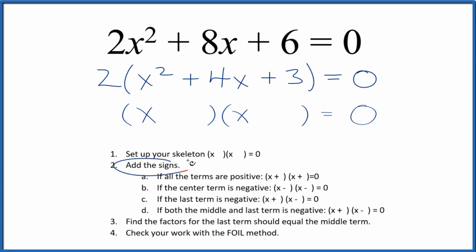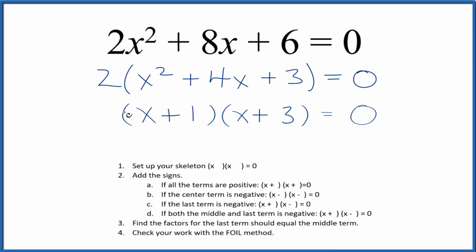If we look at the signs here, we have a positive and a positive, that means we're gonna have a positive and a positive here in our skeleton equation. Now we're just finding the factors for that last term, and they should equal the middle term, add up to the middle term. So for 3, it's just 1 and 3, those are the factors. And you can see 1 plus 3 gives us 4, so we've factored this equation here. We do need to remember to bring our 2 down here.